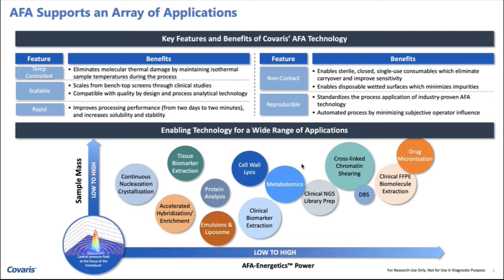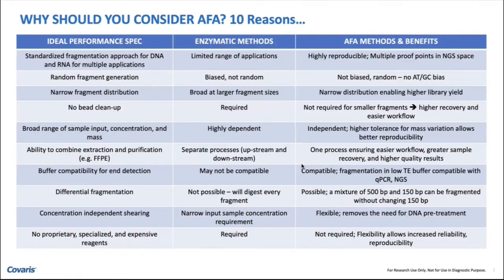Where AFA really made a huge change was when it was used years ago in next-generation sequencing labs. Since then, it's fair to say that 80% to 85% of NGS labs use AFA for DNA shearing — specifically short-read sequencing anywhere between 175 base pairs to 1 kb — where AFA is considered the gold standard.